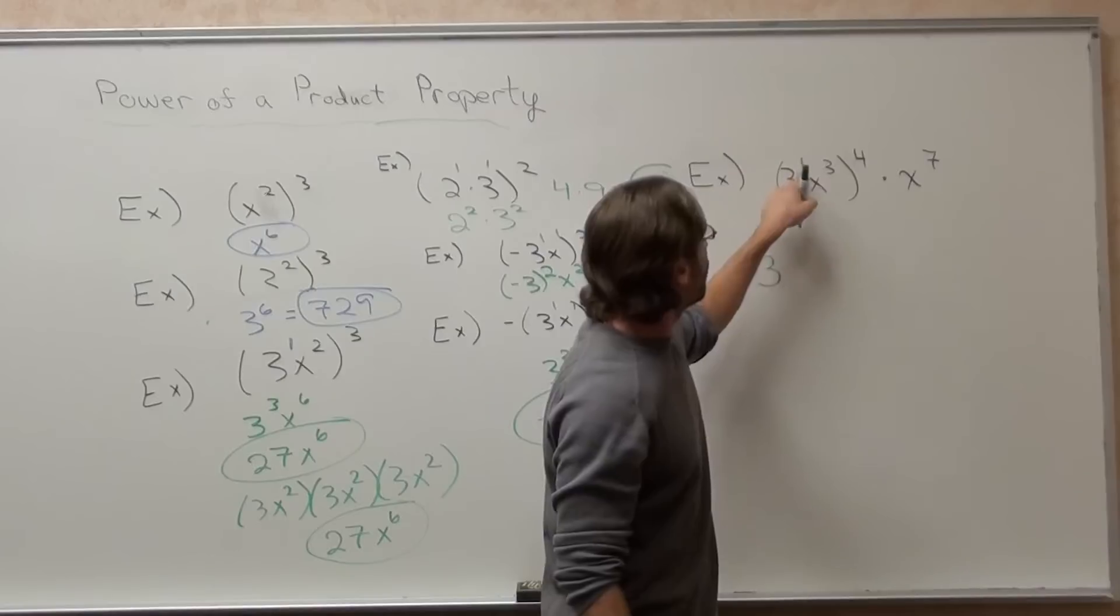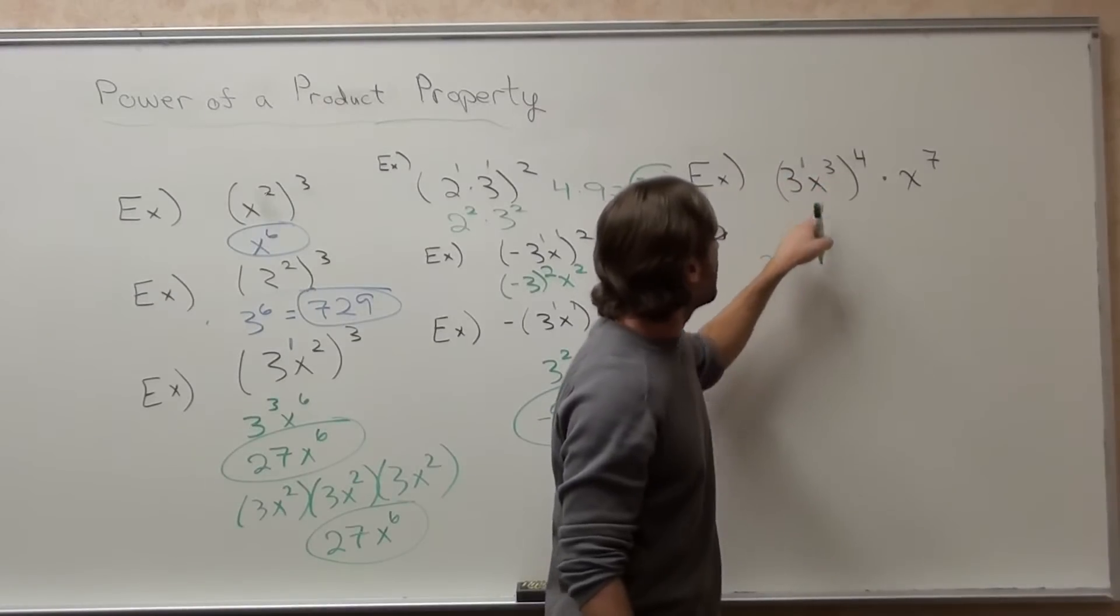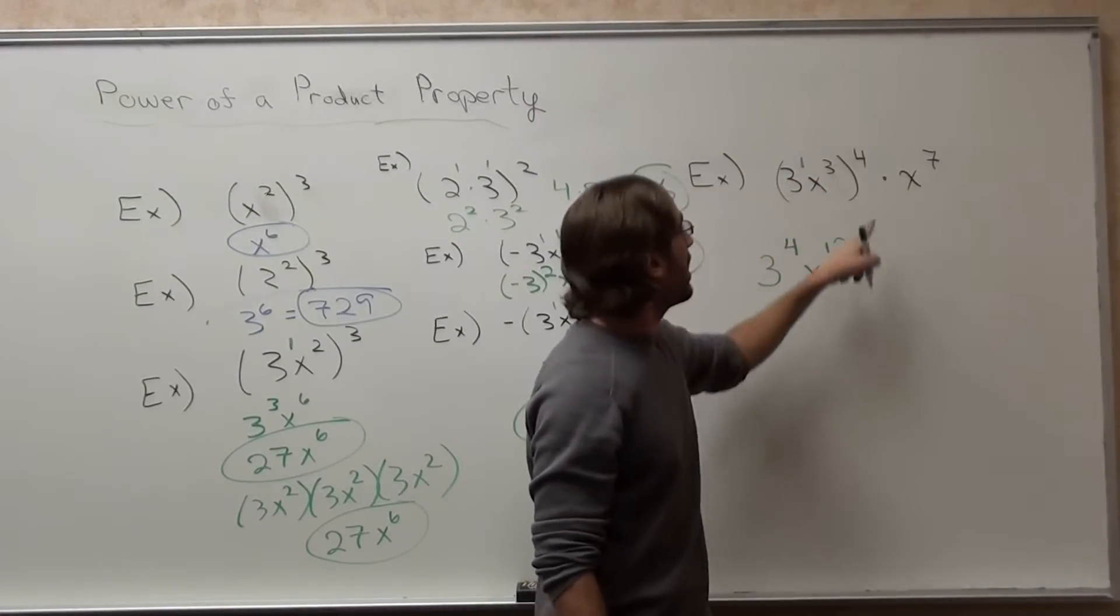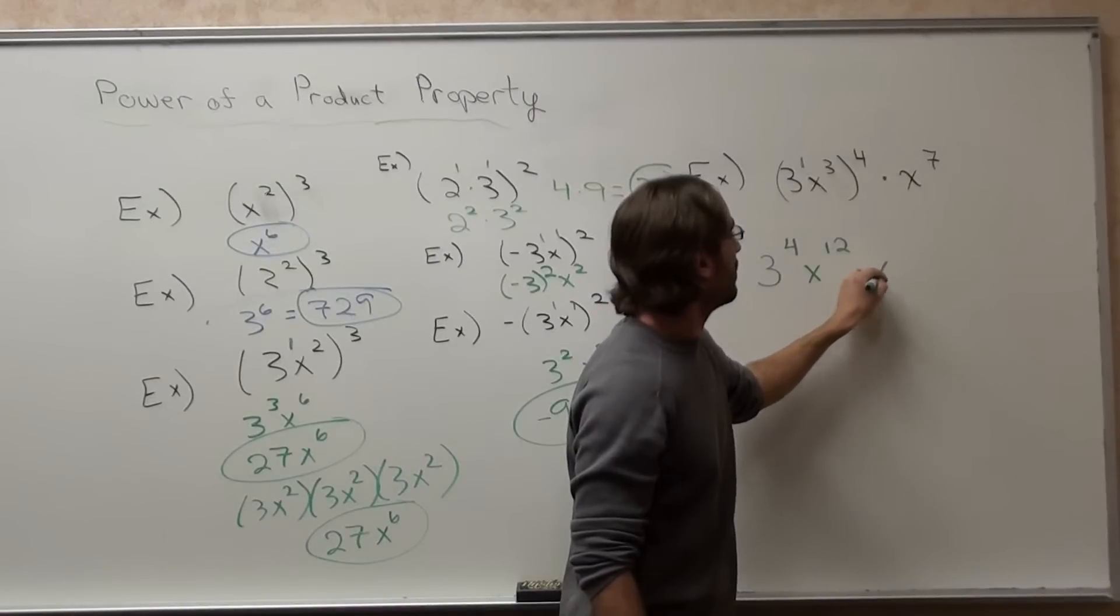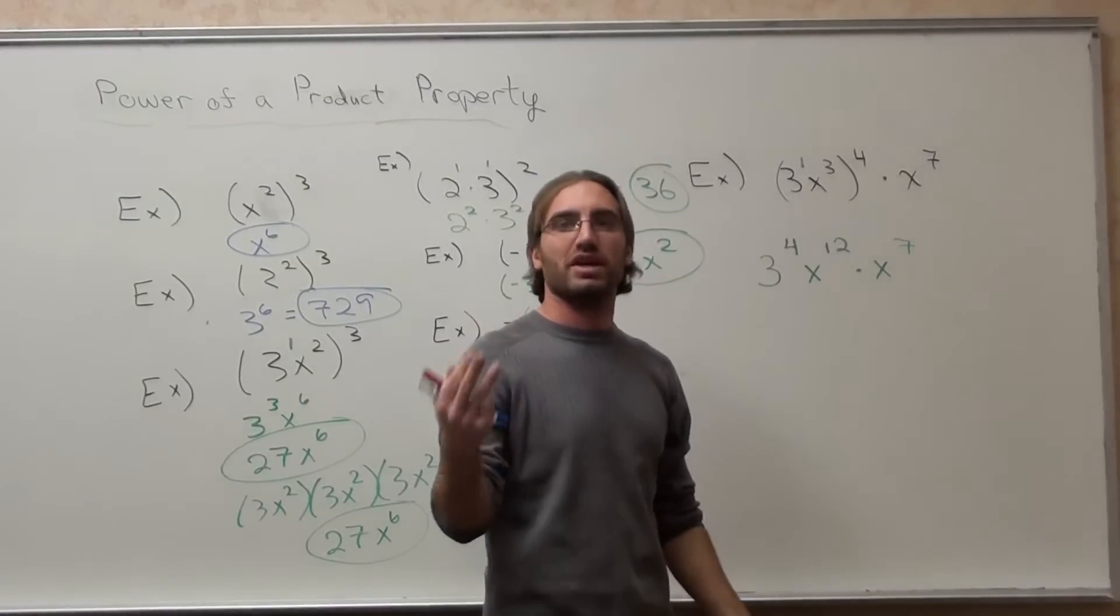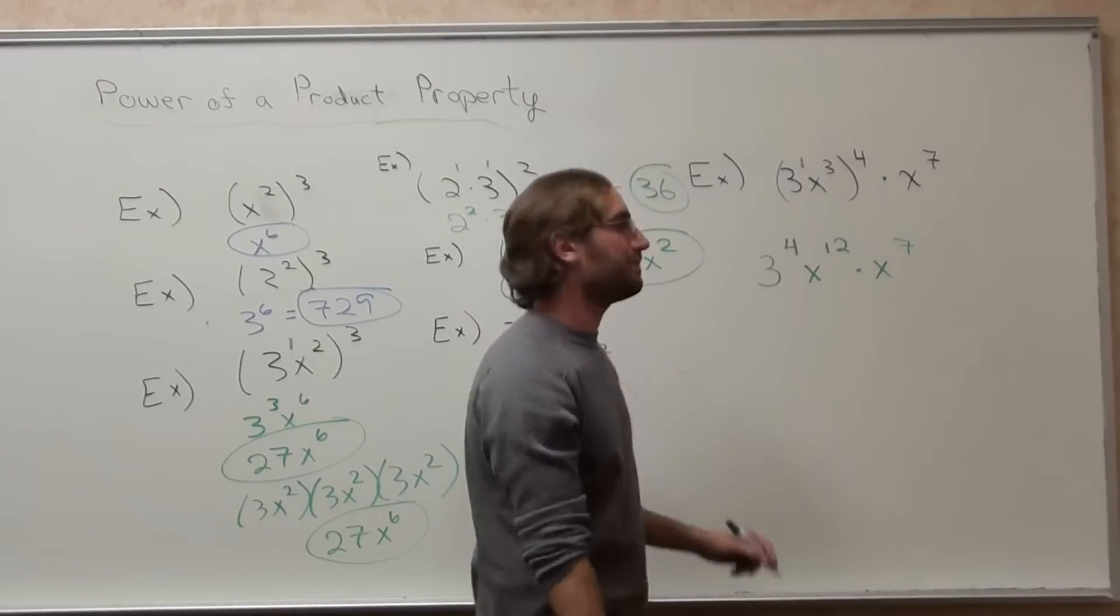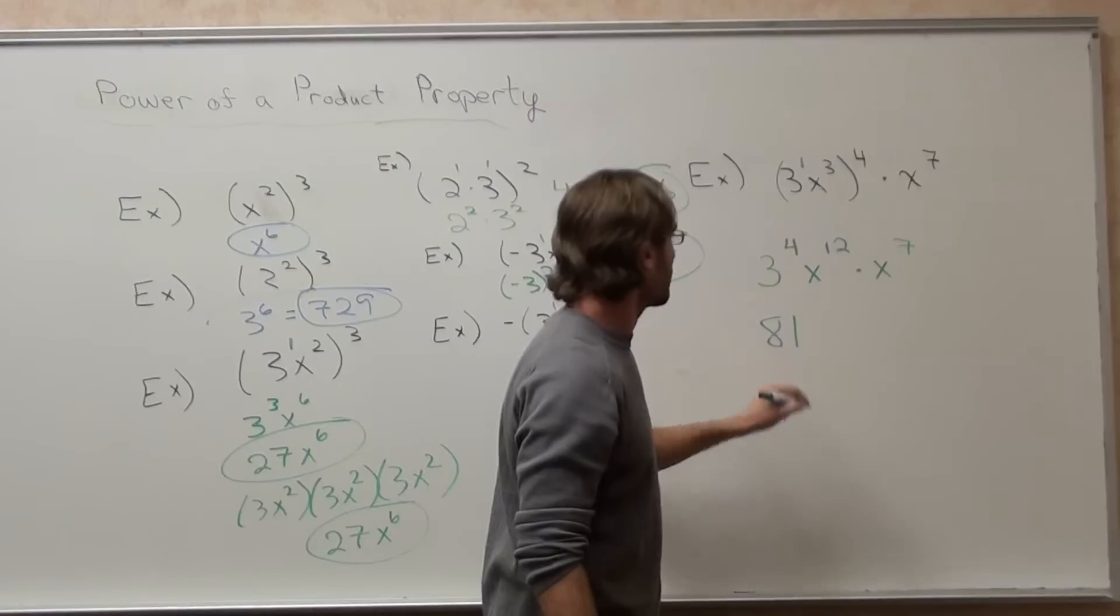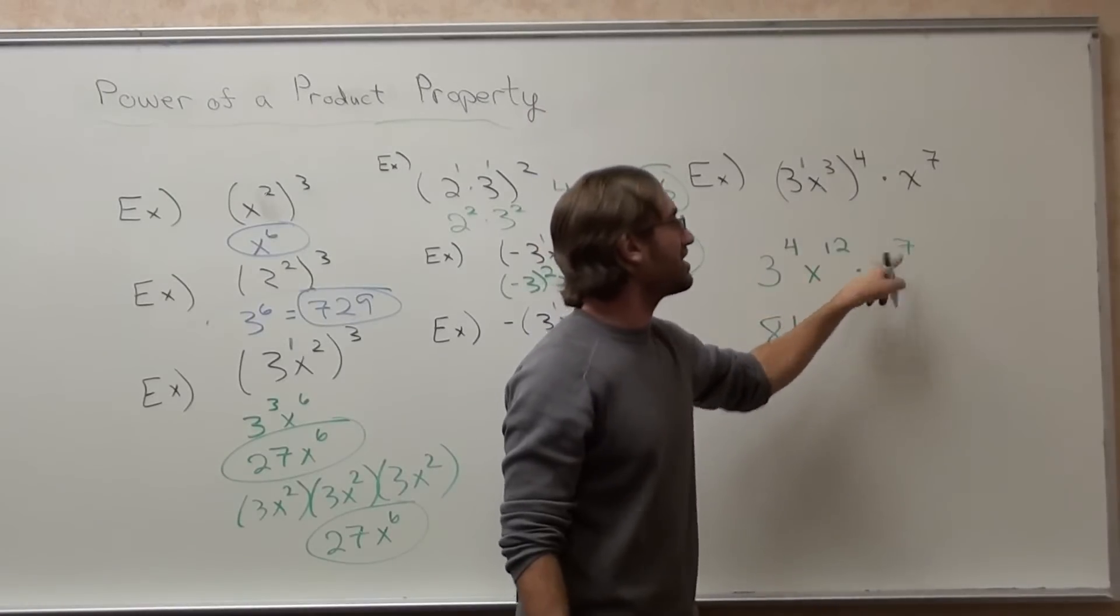And it's 3, 1 times 4 is 4, x to the 12th, and then you've got times x to the 7th left over. So, 3 to the 4th is 3 times 3 times 3 times 3, 81.